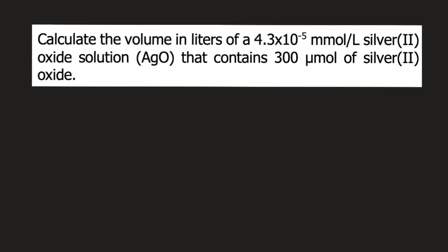Calculate the volume in liters of a 4.3 times 10 raised to negative 5 millimoles per liter silver(II) oxide solution that contains 300 micromole of silver(II) oxide. So if you check the given, we have different units. One is micromole and the other one is millimoles per liter.